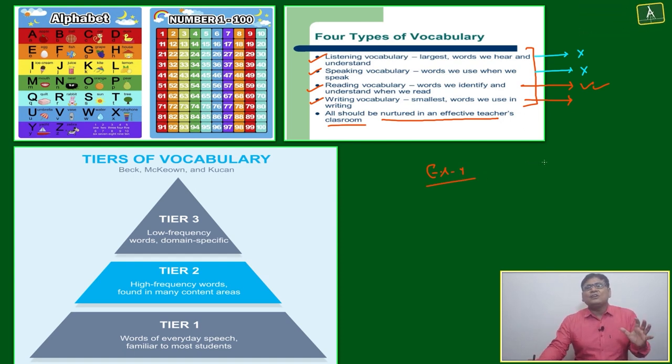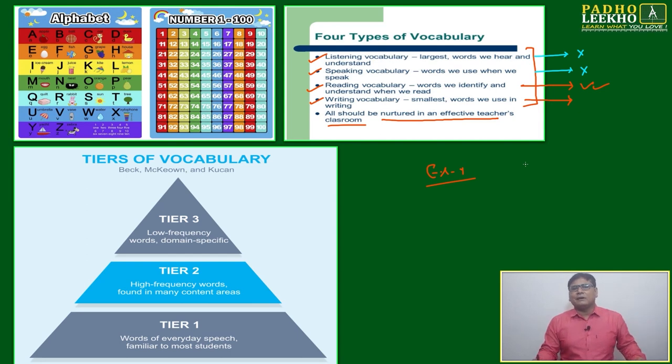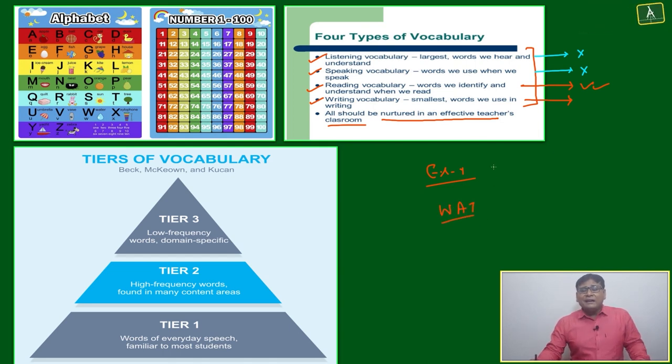They are not checking group discussion. In the group, if five persons are there and one person is weak, they will anyway be able to cross. But they are checking essay writing, they are checking WAT. Why? Because they know speaking - maybe they are from city area or metropolitan area, they will be able to speak something and get out.